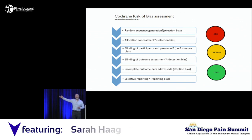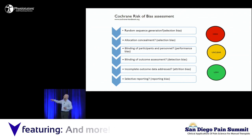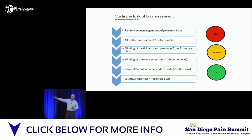When we do systematic reviews of clinical trials, we assess each trial's methods against these criteria: Did they randomize properly? Did they protect that randomization? Did they blind participants? Could they blind the outcome assessors? Did they deal with missing data in an appropriate fashion? Have they reported all the outcomes they said they would, or are they just reporting the ones they want you to see?